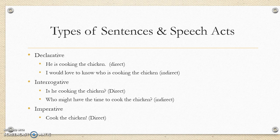Speech acts can be broken into further sentence types. Declarative: 'he is cooking the chicken' is direct declarative; 'I would love to know who is cooking the chicken' is indirect declarative. Interrogative questions: 'is he cooking the chicken?' is direct; 'who might have the time to cook the chicken?' is indirect. Imperative sentences are usually orders or commands and are very difficult to make indirect because of how demanding they are — 'cook the chicken' is a direct imperative.